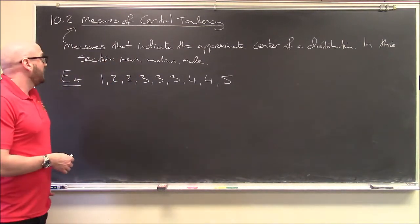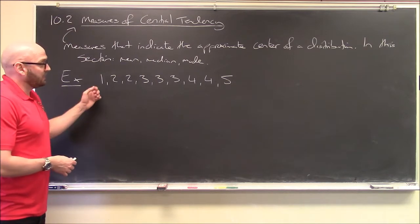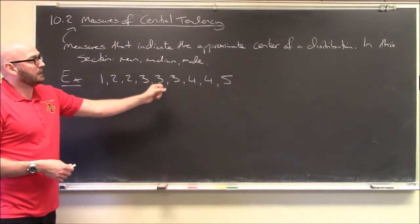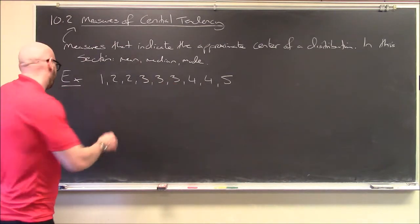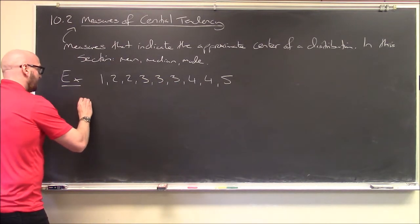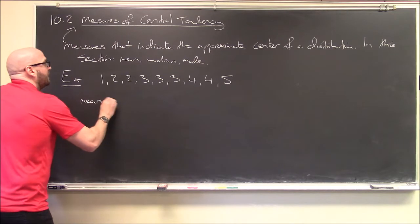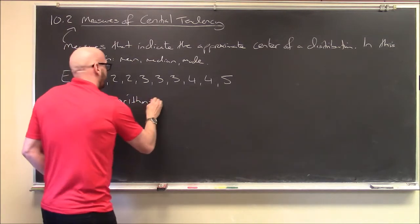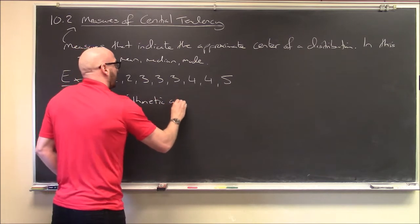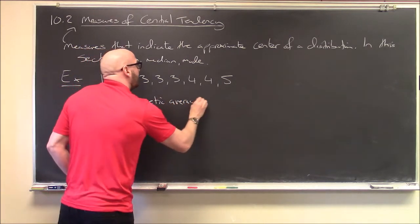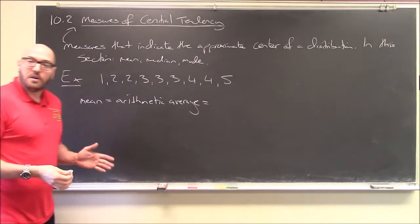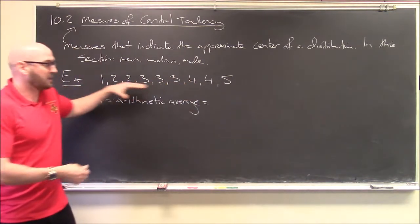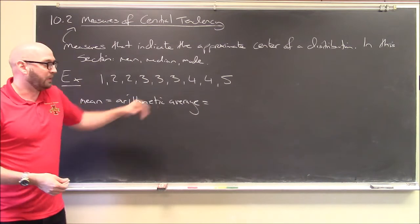Here's the data that I have — just this sample of numbers: 1, 2, 2, 3, 3, 3, 4, 4, and 5. I want to compute the mean. The mean is also sometimes called the arithmetic average. All I have to do is add them all together and then divide by the total number of elements. So we'll add: 1 plus 2 plus 2 plus 3 plus 3 plus 3 plus 4 plus 4 plus 5, divided by the total number of elements.